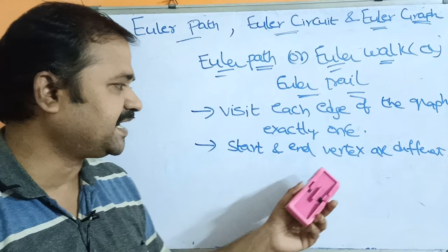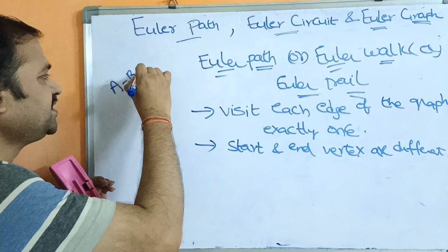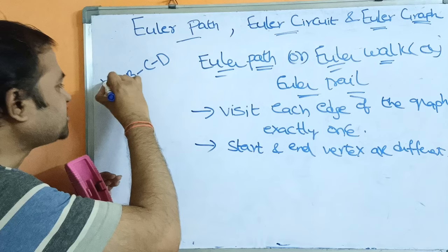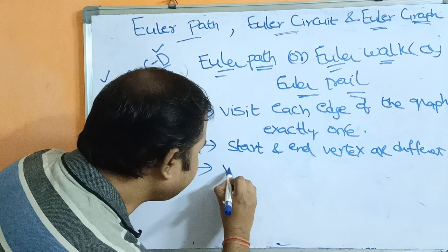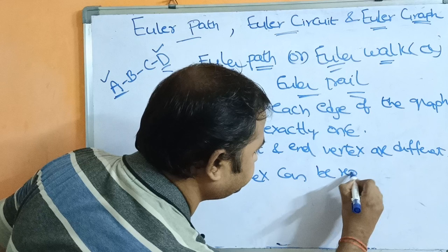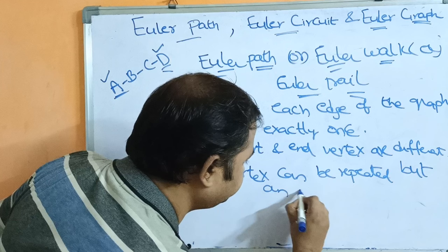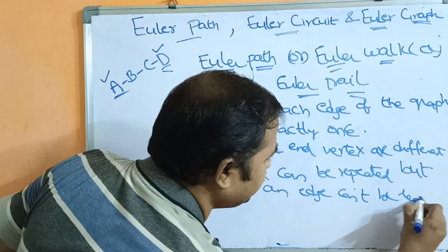We know what a path is — a path means a sequence of edges. For example, we have edges A to B, B to C, C to D. In Euler path, the starting vertex as well as the ending vertex are different; they are not the same. Vertex can be repeated, but an edge cannot be repeated.